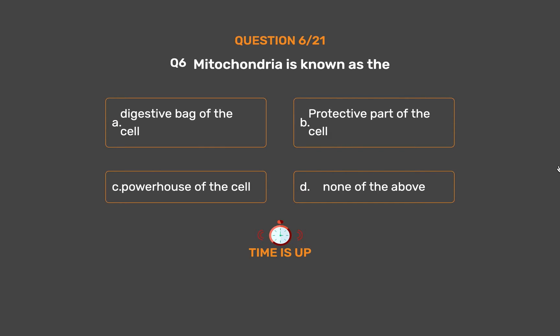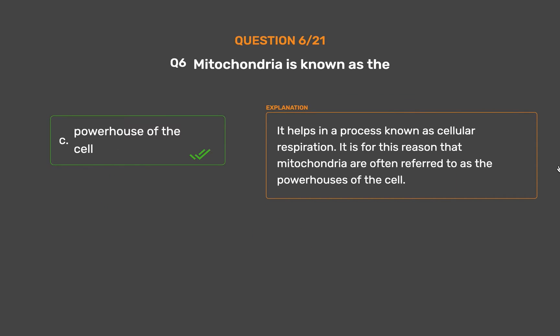The correct answer is Option C: Powerhouse of the cell. It helps in a process known as cellular respiration. It is for this reason that mitochondria are often referred to as the powerhouses of the cell.